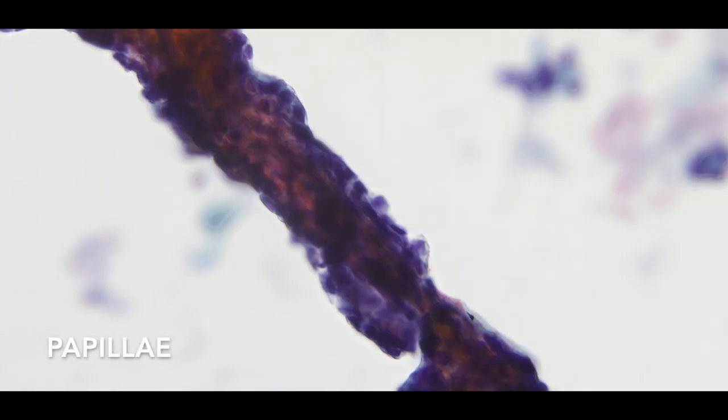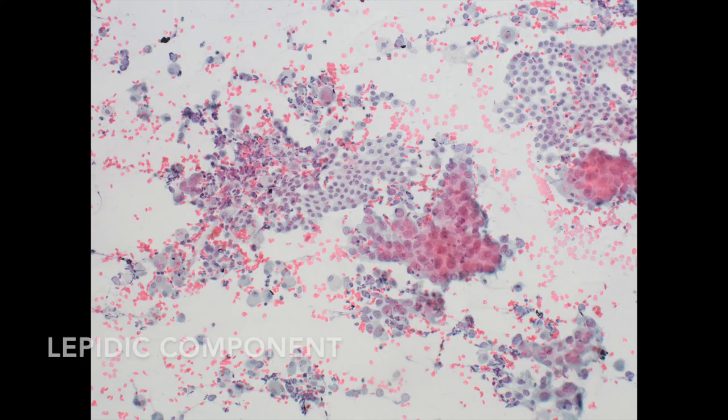Intact papillae are rarely seen on FNA specimens but can be helpful in determining differentiation. Lastly, a lepidic component with flat sheets that can appear quite bland, sometimes admixed with more overtly malignant groups, as in this example, can show that the lesion is an adenocarcinoma.